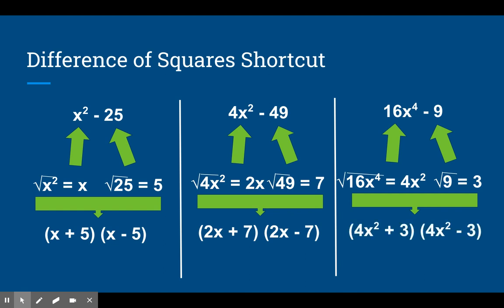This only works for perfect squares. For example, if you add 3x squared, there is no square root of 3. It's not a perfect square, so that doesn't work. It's only for perfect squares.